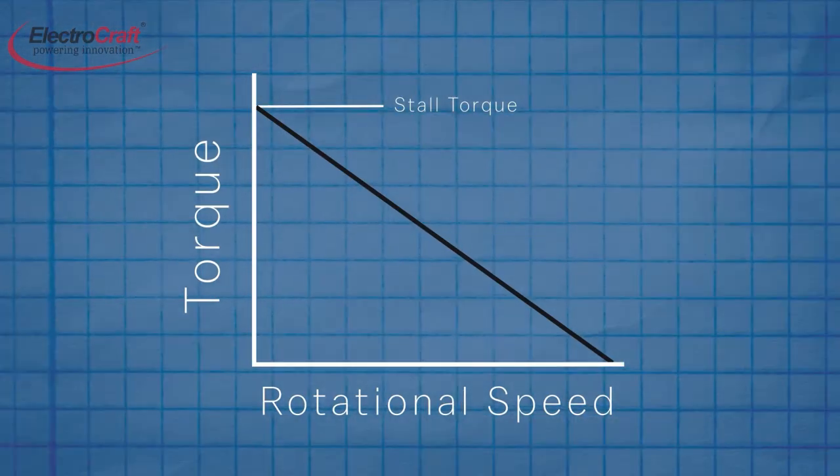The curve slopes downward until it intersects with the X axis, when torque is zero and speed is at its maximum. This point is known as the no-load speed.